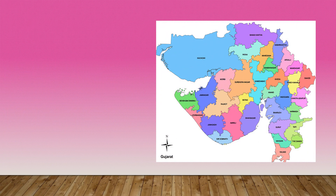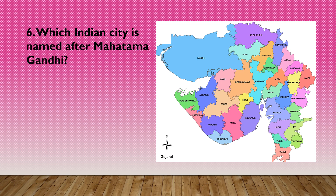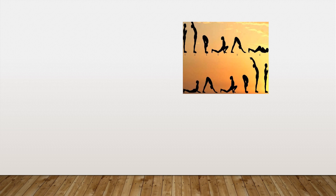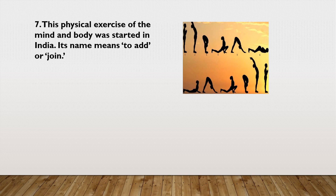Now I am going to show this map again. This is the state of Gujarat, which I discussed earlier. Which Indian city is named after Mahatma Gandhi? That is Gandhinagar, and Gandhinagar is also the capital of Gujarat. Now, students, see the different forms of Surya Namaskar. What are these people doing? They are doing exercise. This physical exercise of mind and body was started in India — its name means to add or join. That is Yoga. Yoga is celebrated on 21st June internationally all over the world.